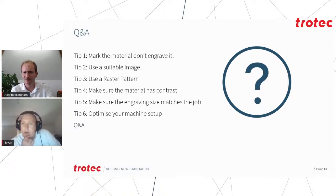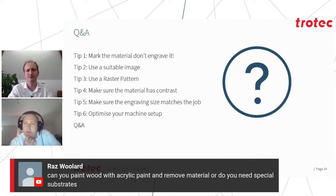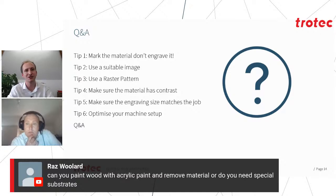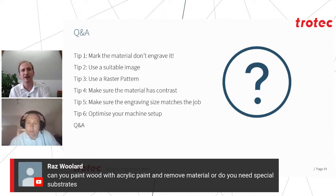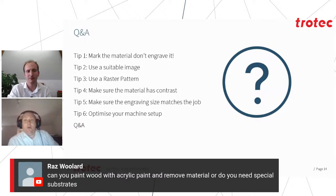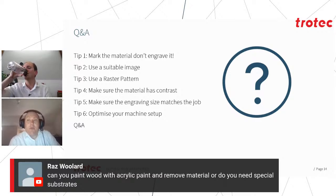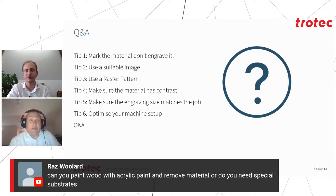A question from Raz Woolard: 'Can you paint wood with acrylic paint and remove material, or do you need special substrates?' You can use pretty much any paint — just make sure your power setting is correct so you're not creating too much damage to the surface. One tip I use is if you can paint in advance, add further protection such as low-tack tape, which can help concentrate the laser energy into removing the material rather than spreading too much. If you paint the surface of the wood first, you literally only need to remove that surface of paint to generate a good contrast — it actually makes life easier, though you then don't have a product that looks like a natural piece of wood.